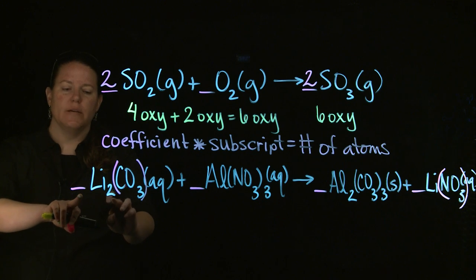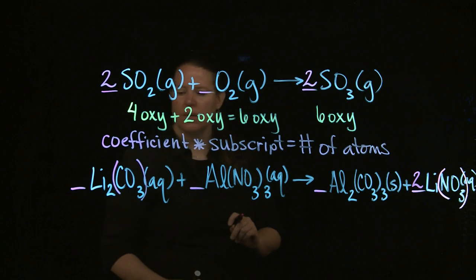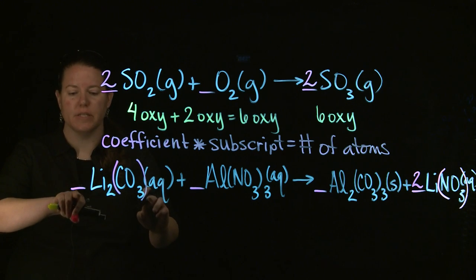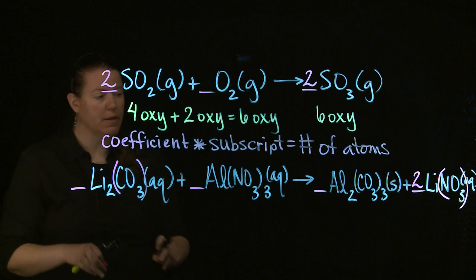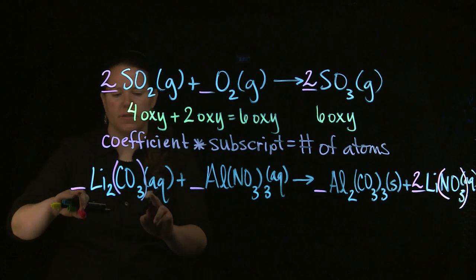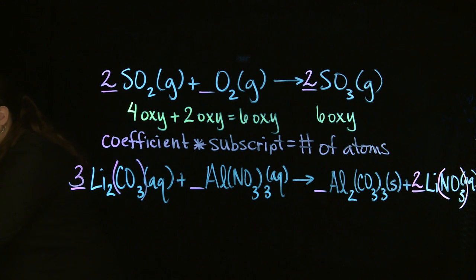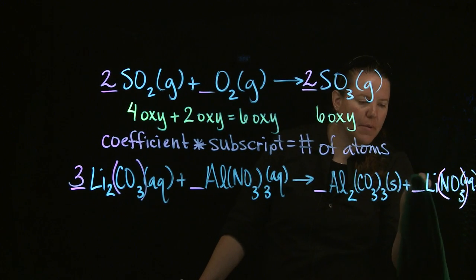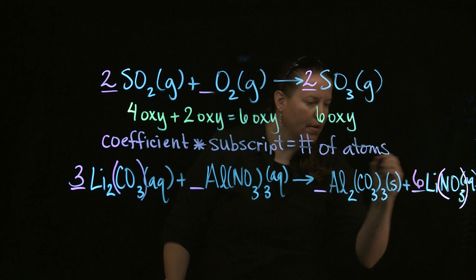So let's do Li's real quick. I have 1 times 2 Li's on this side. I have 1 times 1 Li's on this side. I would think I need a 2 here, but let's look at CO3s, carbonates. I have 1 times 1 carbonates on this side, and I have 1 times 3 carbonates on this side. So I have 3 carbonates that I need to balance here. I'm going to add a 3 right there. That changed my number of Li's. It changed it from 2 that I had to begin with to now 3 times 2, which is 6 Li's. So I need to balance that over here.